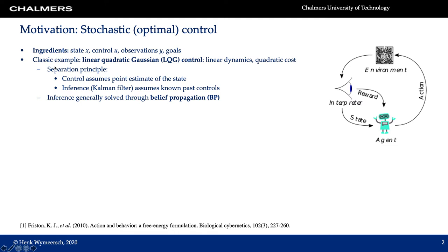A classic example is LQG, which stands for linear quadratic Gaussian control. Here the agent has linear dynamics and a quadratic cost, quadratic in both the state and the control. LQG features a so-called separation principle where the control assumes a point estimate of the state and ignores any uncertainty of the state. On the other hand, the inference is done by a Kalman filter which assumes known past controls. This decouples the control and inference problem.